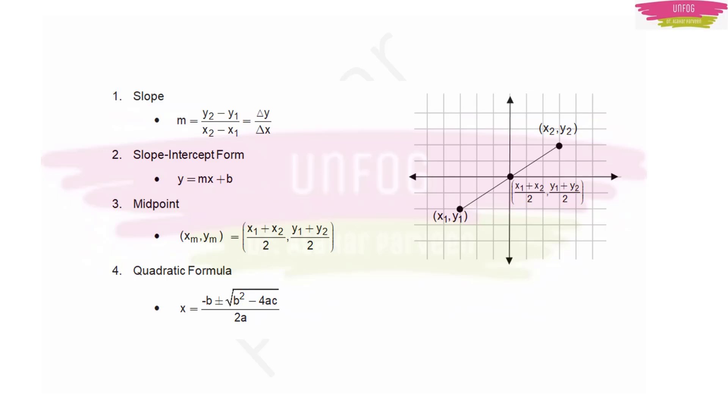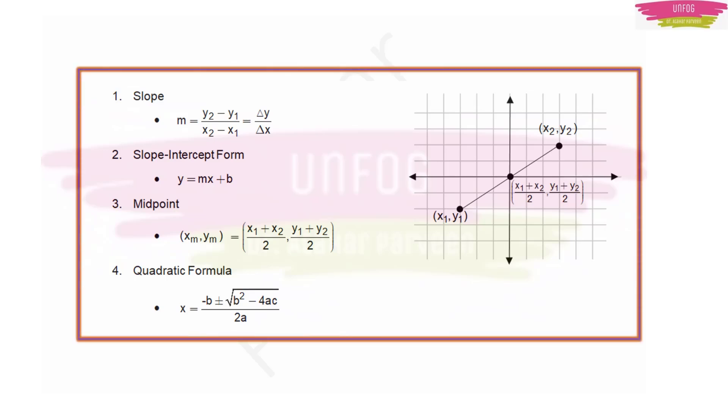Then you have this coordinate geometry formulas like you have the formula for slope, and for slope intercept form is also there. Then you have this midpoint formula also. Of course, I have included this quadratic equation also here, the quadratic formula. And midpoint formula will be ((x₁ + x₂)/2, (y₁ + y₂)/2) where x₁, x₂, y₁, y₂ are x and y intercepts.